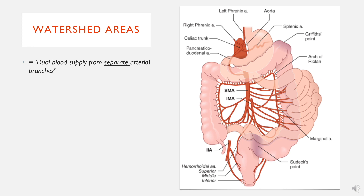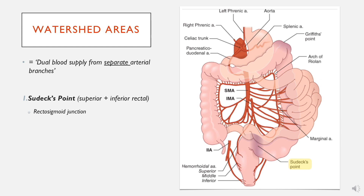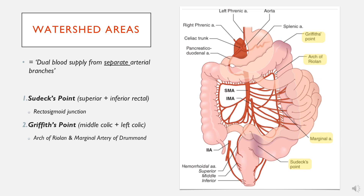This leads on to something called watershed areas. A watershed area is any part in the body — quite relevant in the bowel — where there is a dual blood supply from two separate arterial branches. The first example is at the rectosigmoid junction. The rectum is supplied by the superior, middle, and inferior rectal arteries, and at the rectosigmoid junction the anastomosis is most pronounced at Sudeck's point, where the biggest crossover is between the superior rectal and the other two.